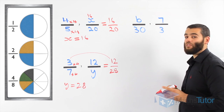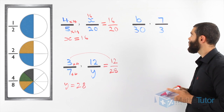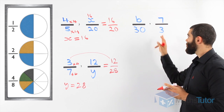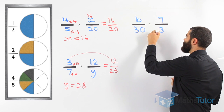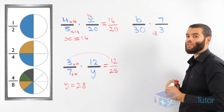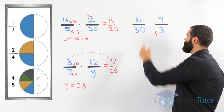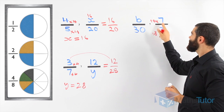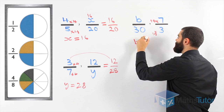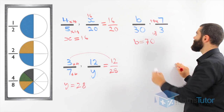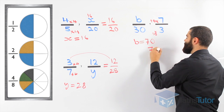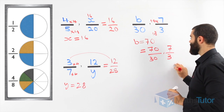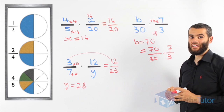Once again, we have two equivalent fractions. We are asked to find b in 7 over 3 equals b over 30. How do we get from 3 to 30? 3 times 10 is 30. Whatever we do to the denominator, we must do to the numerator. 7 times 10 is 70, so b must be 70. That means b over 30 is really 70 over 30. It is equivalent to 7 over 3. They are written differently, but they have the same value.